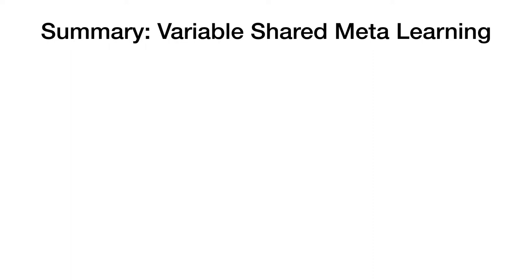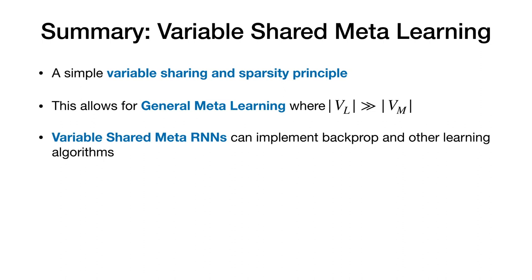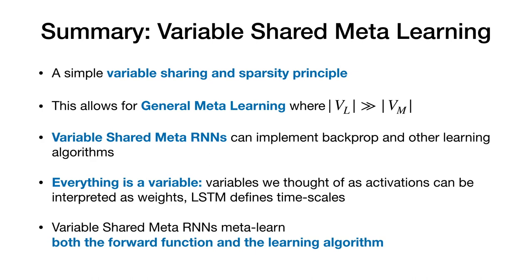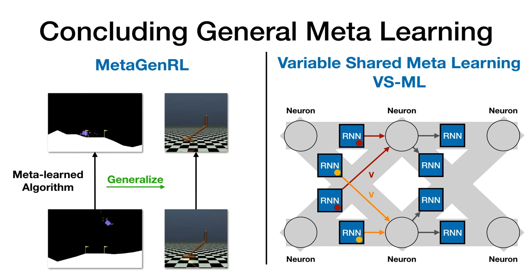Furthermore learning turns out to be much faster compared to backpropagation with Adam. But it gets better. The resulting LSTM can be run unmodified for meta testing on an entirely different data set. Here fashion MNIST. It still performs learning fairly well meaning we have meta learned a general learning algorithm. If we compare this to the standard meta RNN we see that our baseline horribly overfits. And it still performs slightly better than online backpropagation. This result is quite remarkable as such strong generalization is achieved without using any hard coded gradients during meta testing purely by running the LSTM forward. So in summary we have introduced variable shared meta learning a simple variable sharing and sparsity principle that is used to construct variable shared meta RNNs. This allows for general meta learning where the number of learned variables is much bigger than the meta variables. We can meta learn backprop and other learning algorithms in the recurrent dynamics of those RNNs. Everything is a variable. There is no precise distinction between a weight and an activation. Variables we thought of as activations can be interpreted as weights. The rate at which these variables change depends on the LSTM. Variable shared meta RNNs meta learn both the forward function and the learning algorithm.